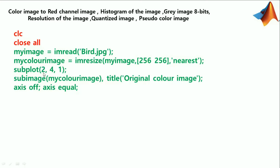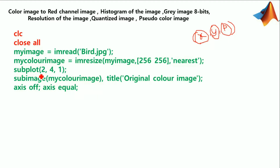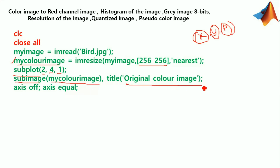We use subplot(2, 4, 1). In subplot, the first value represents the number of rows (x direction), the second represents the number of columns (y direction), and the third represents the position. So from this subplot we have two rows, four columns, and the color image is at position one. We use subimage(my_color_image) — you can also use imshow. The title is 'Original Color Image'.